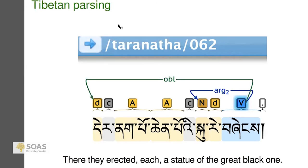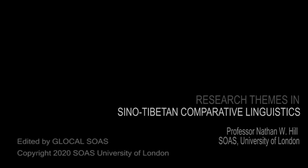You see: the D is a demonstrative, the C is a case marker, the A is an adjective, then another case marker, then a noun, then a determiner, and then the verb. There's an arrow that goes from the verb to the heads of the noun phrases it's governing. In this case, we have a sentence that says: 'There they erected each a statue of the great black one.'